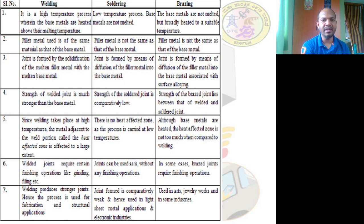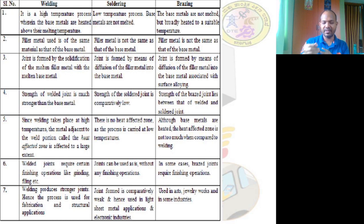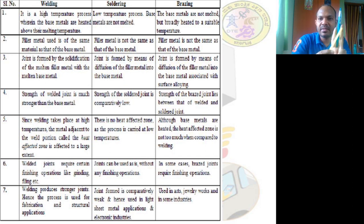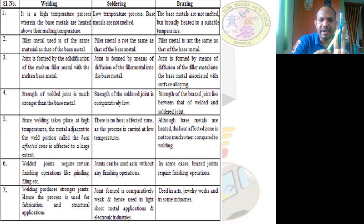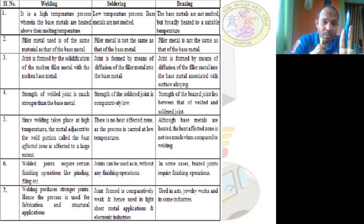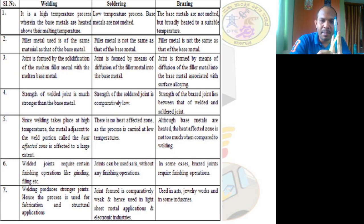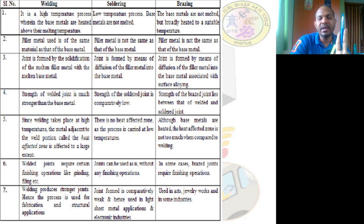Since welding takes place at high temperatures, the metal adjacent to the weld portion — called the heat affected zone (HAZ) — is affected to a large extent. In fusion welding, for example, if this area is at around 2000 degrees centigrade, the surrounding area also experiences similar temperature, so the heat affected zone is greatly influenced.